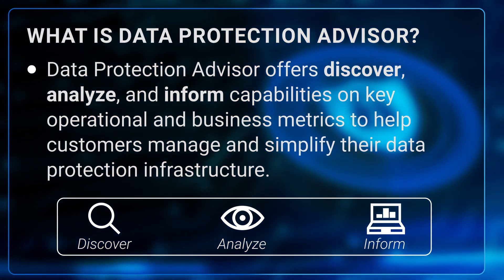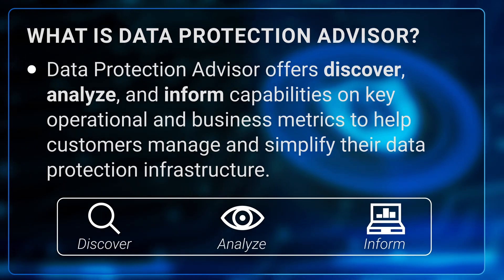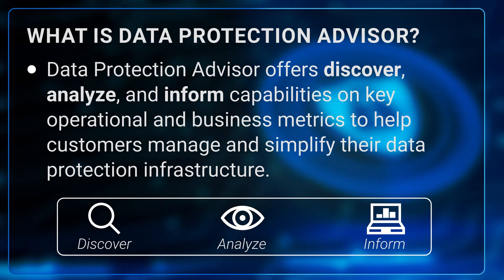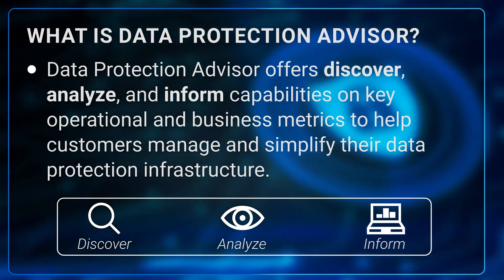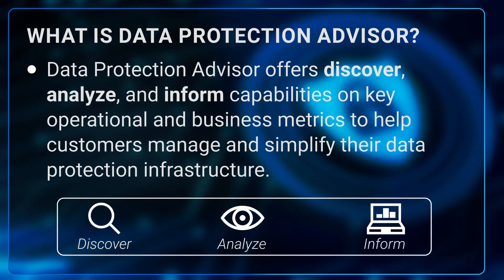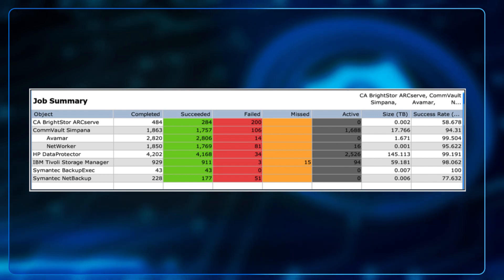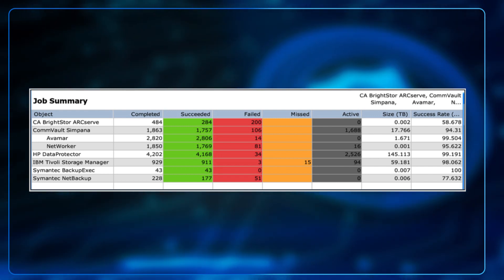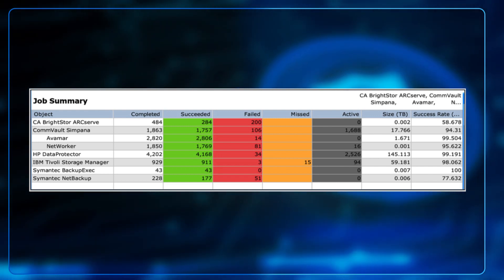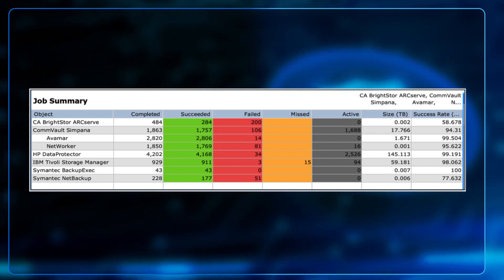Using advanced technology, DPA digests raw data, analyzes it in real-time, and makes sense of it by connecting the dots between different parts of the environment. For example, it helps answer questions like: is that new virtual machine protected? Are all the LUNs for the database replicated? Is this backup job significantly smaller than the average size of the job over the past few days? You can run ad hoc reports in DPA, get them by email every morning, generate alerts using SNMP traps or email, and publish alerts to your SharePoint portal.